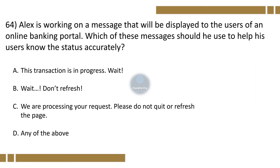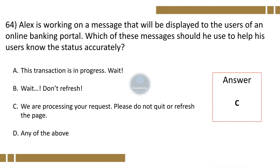Question 64. Alex is working on a message that will be displayed to the users of an online banking portal. Which of these messages should he use to help his users know the status accurately? A. This transaction is in process. Wait. B. Wait, don't refresh. C. We are processing your request. Please do not quit or refresh the page. D. Any of the above. The correct option is C.